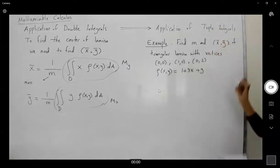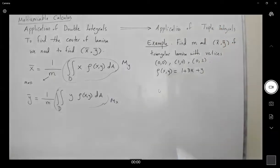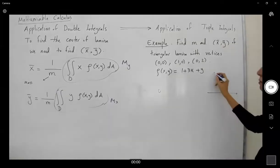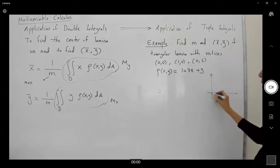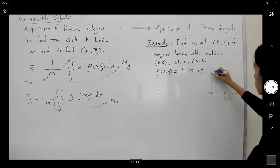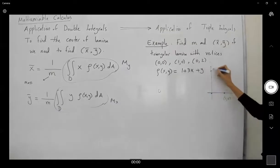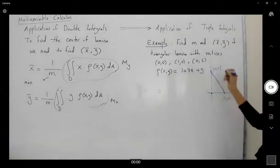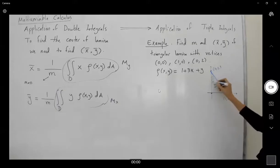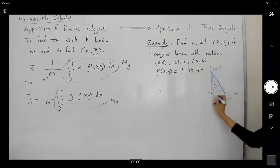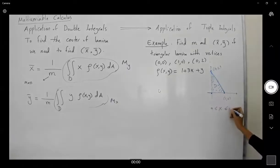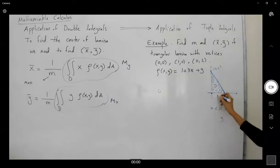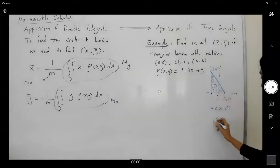So let's try to visualize our region. We have (0,0), (1,0), and (0,2). This is your triangular region — let us call it D. As you can see, your x is bounded between 0 and 1. What about your y? y is bounded between 0 and the decreasing line 2 minus 2x.